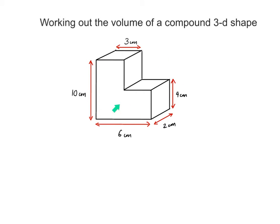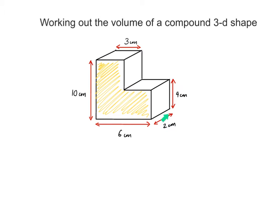Here we have a compound 3D shape. In order to work out the volume of a compound 3D shape, all we need to do first is to work out the cross-sectional area. We work out this cross-sectional area and then we multiply it by the width — or you can say the length — of the shape. So work out the area of the cross-sectional piece here.